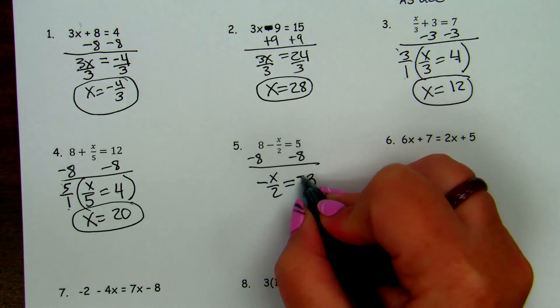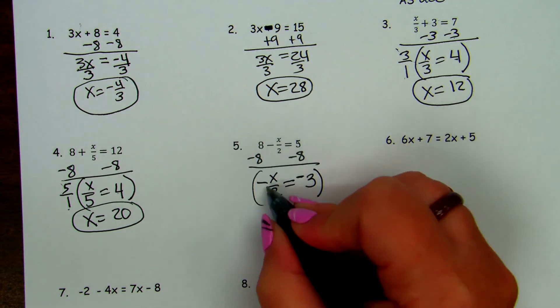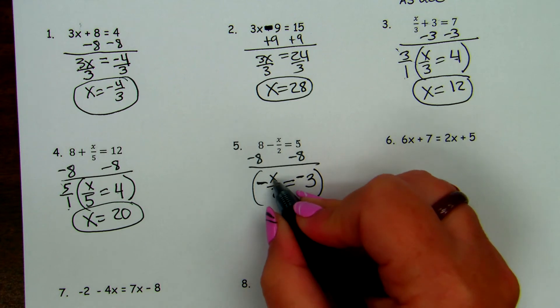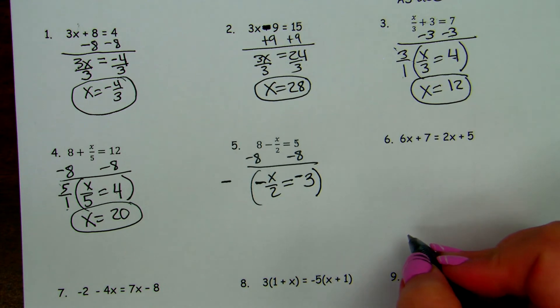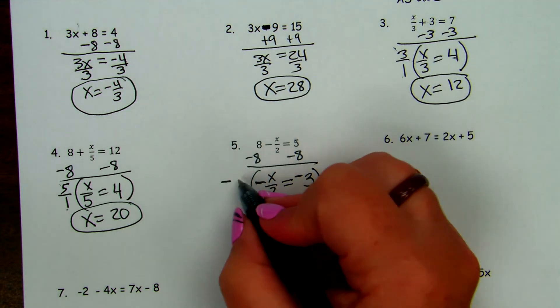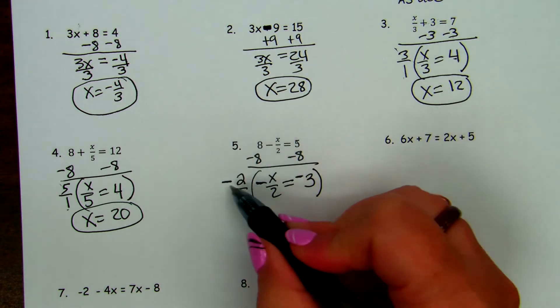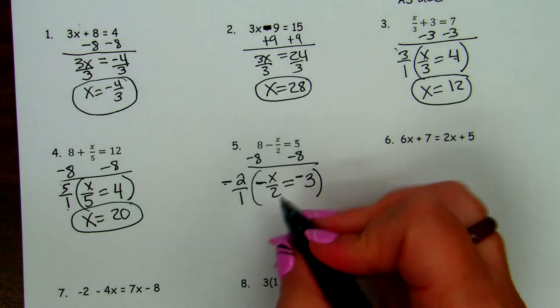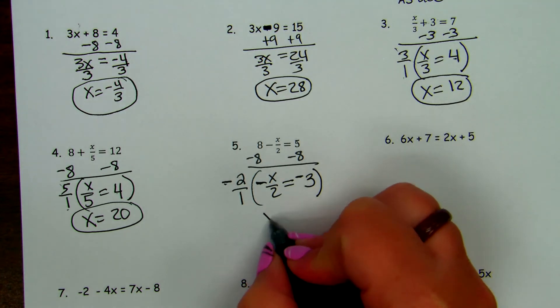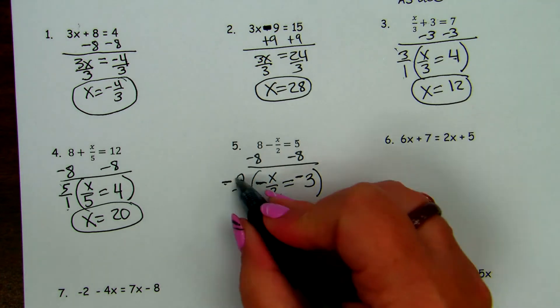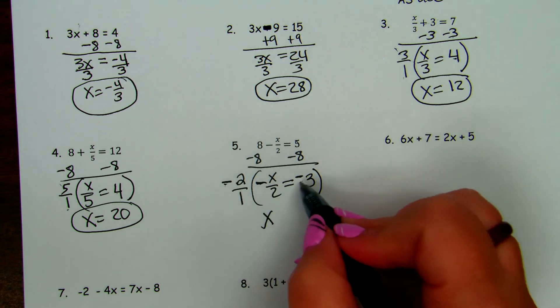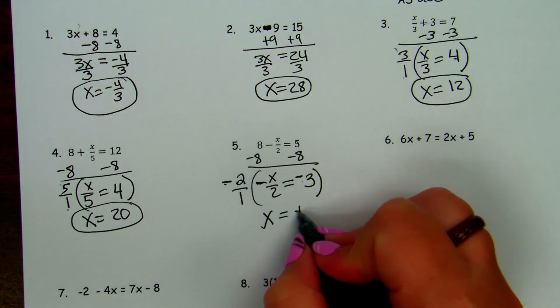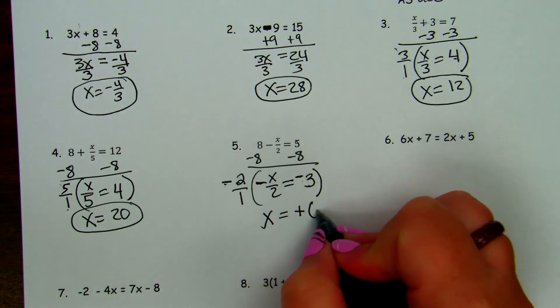And when we multiply both sides, we have a negative to deal with. We don't want negative x. We want x. So we're going to multiply by negative what? What's in the denominator? 2. So 2 over 1. So negative times negative is positive, and 2 divided by 2, they cancel. And then negative times negative is positive, and 2 times 3 is 6.